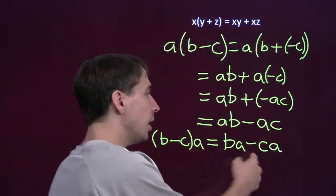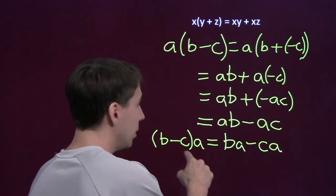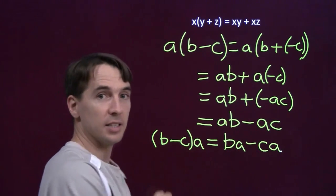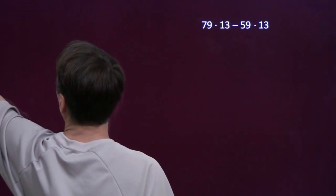We call it expanding when we go this way. When we come back this way, we call it factoring. We factor out an a to write this difference as this product. Now, let's put this to work on a couple of problems.